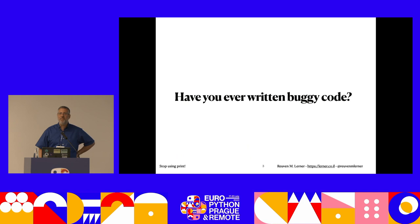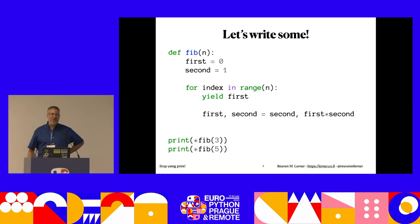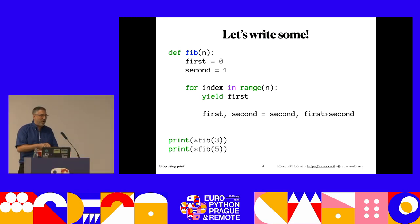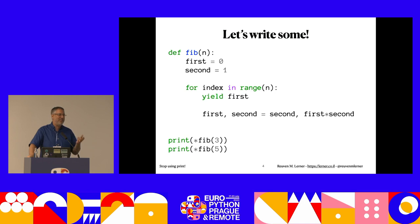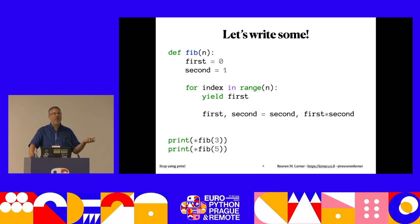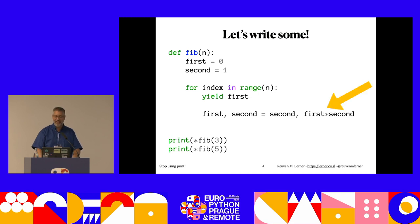So a question for the audience: have you ever written buggy code? Let's dig in and write some already. We're going to write a generator function for the Fibonacci sequence - something you undoubtedly do every day at work. This generator function takes an argument n telling us how many elements to return. First is zero, second is one, then we iterate over that range returning the first, and do a switcheroo where first gets what was previously second and second gets first times second.